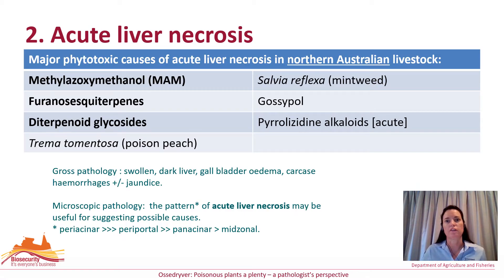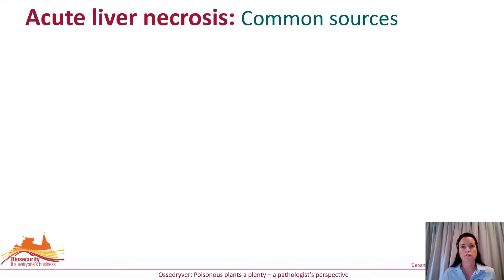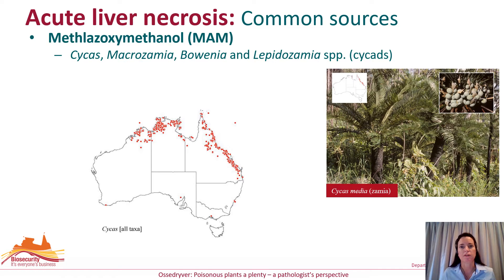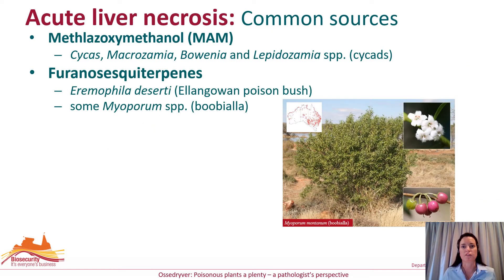Acute liver necrosis is a common cause of sudden death, with the plant toxins listed here being the major causes in livestock across northern Australia. Sources of hepatotoxicity in livestock are numerous and varied and include plants, cyanobacteria, fungi and even insects such as with sawfly larval poisoning. Plants most likely to be responsible for liver necrosis include MAM-containing cycads in the genera Cycas, Macrozamia, Bowenia and Lepidozamia, and Eremophila deserti and some closely related species of Myoporum that contain furansesquiterpenes.